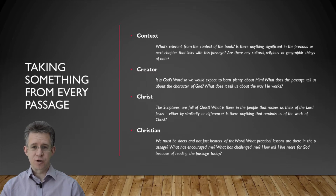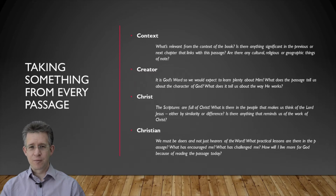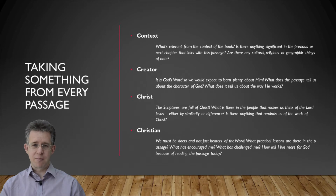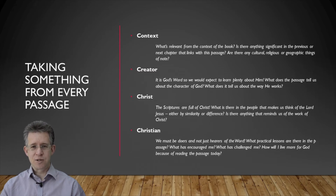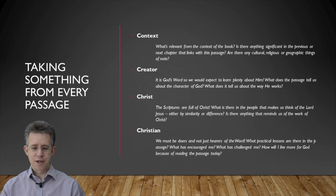One useful thing we can do when we come to a book is just to read it through several times and write a one-sentence summary of each chapter — we'll start to see the flow of the book. If we're looking at a chapter, take the chapter and write each verse out in our own words, going through the chapter doing that. It really means that we start to notice the detail. Also on context, there might be some cultural things, some geographic things of note — and they're all part of the context.